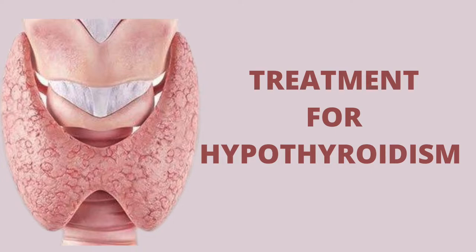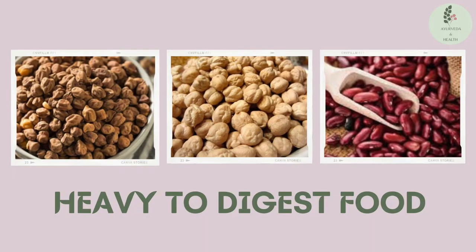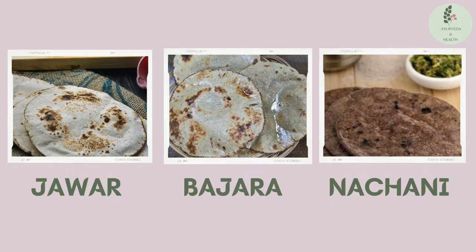Now let's see the specific treatment for hypothyroidism in detail. Foods to avoid: heavy-to-digest foods such as chana, chole, rajma, and chocolate should not be consumed. Things that increase kapha and vata should be avoided — cold foods, excessive use of AC, and cold water for bathing should be avoided. Jowar, bajra, and ragi can be consumed, along with chaas (buttermilk) or moong dal.